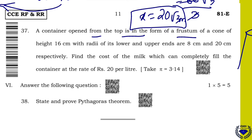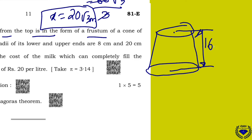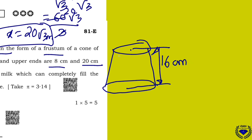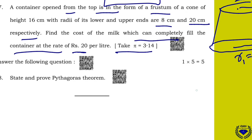A container open from the top is in the form of a frustum of a cone of height 16 centimeters. The radii of its lower and upper ends are 8 and 20 centimeters respectively — so upper end radius R2 = 8 cm, lower end R1 = 20 cm. Find the cost of milk that can completely fill the container at a rate of 20 rupees per liter. Take pi = 3.14.